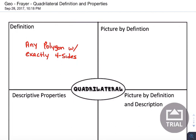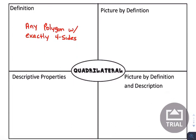Let's lock it into our brains and have a reference for later. I already have the definitions as you guys already practiced them in these note sheets. But let's see if we can suss out what we mean by descriptive properties and how the picture can change — whether you're looking at it by definition, by properties, or in this case both. Let's start with the most basic four-sided polygon shape, the quadrilateral.